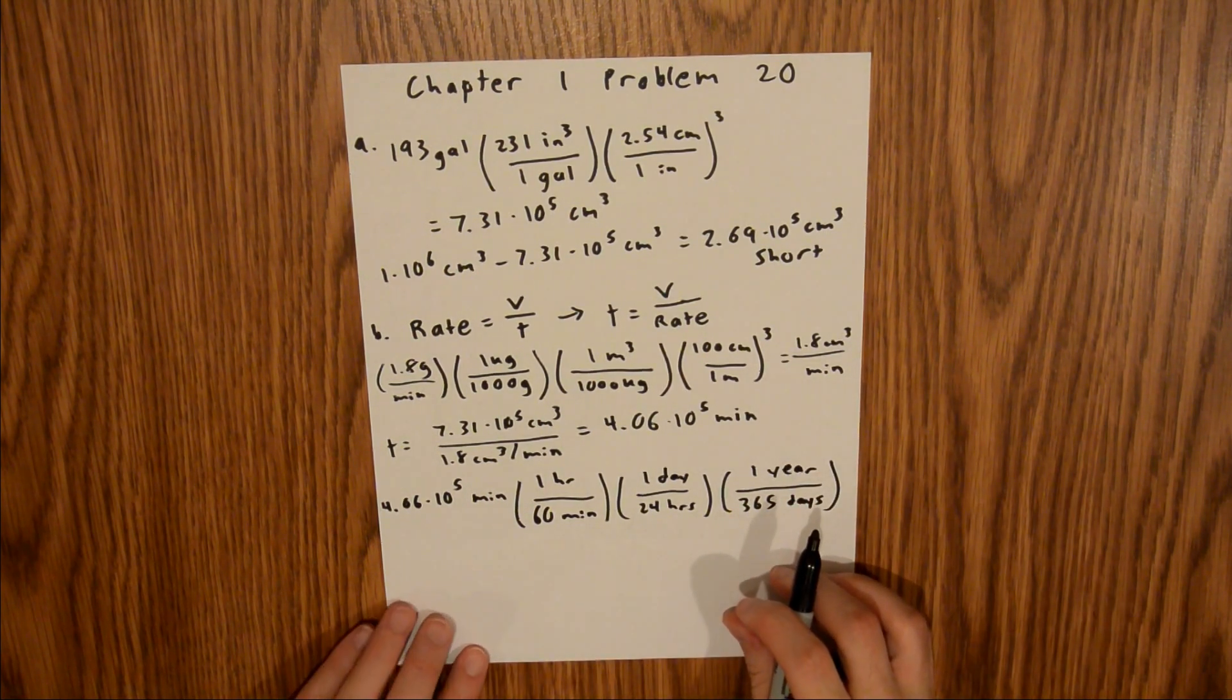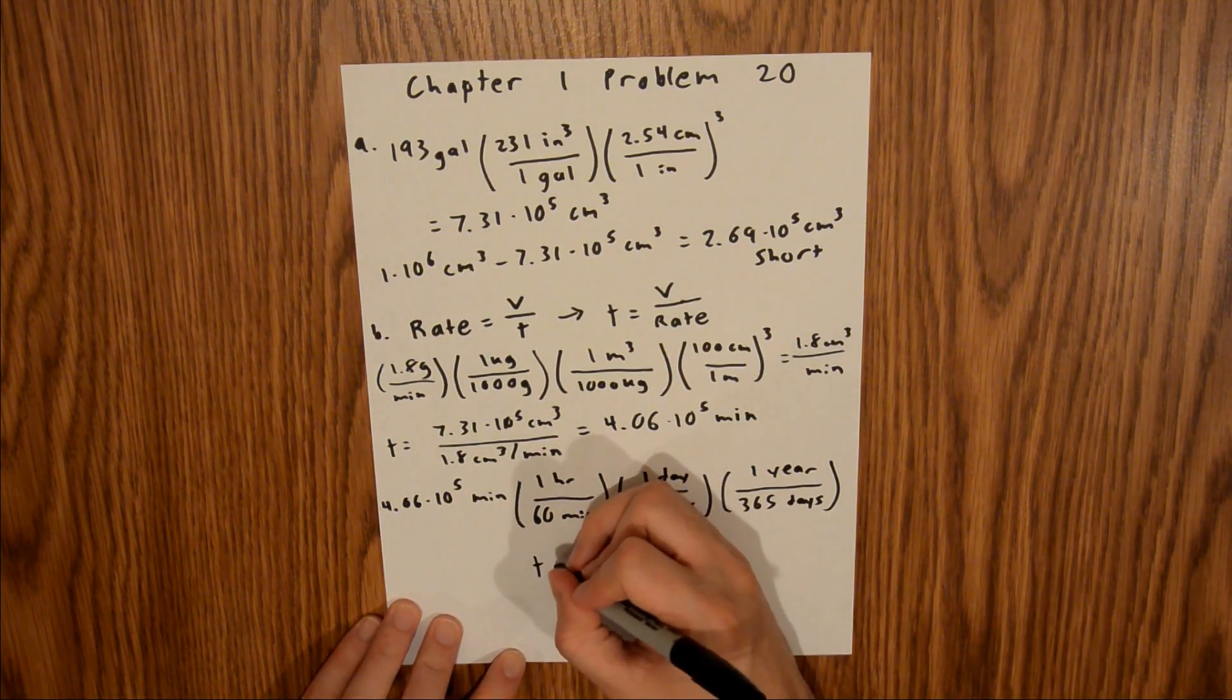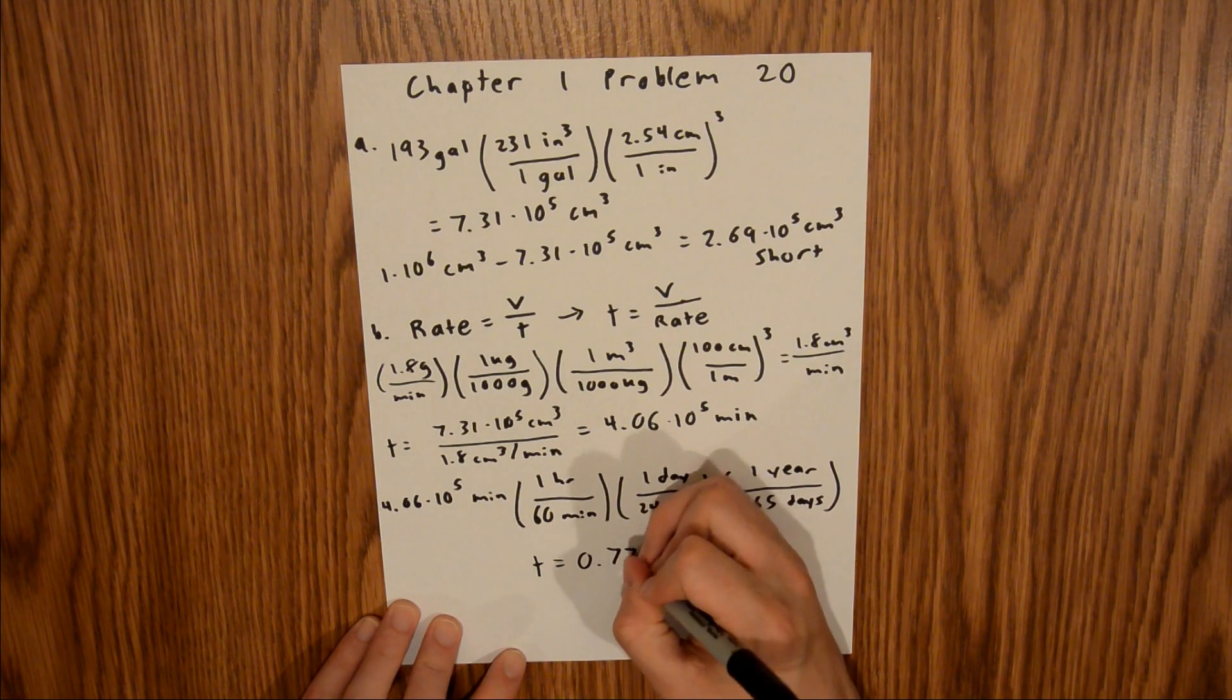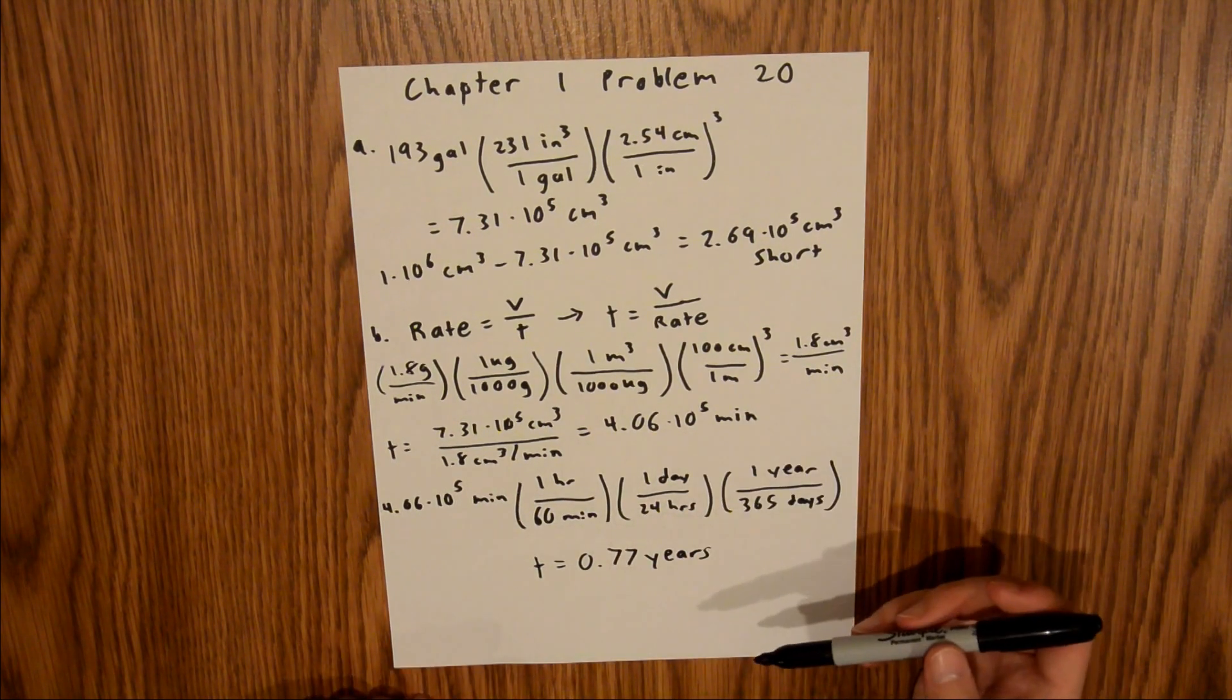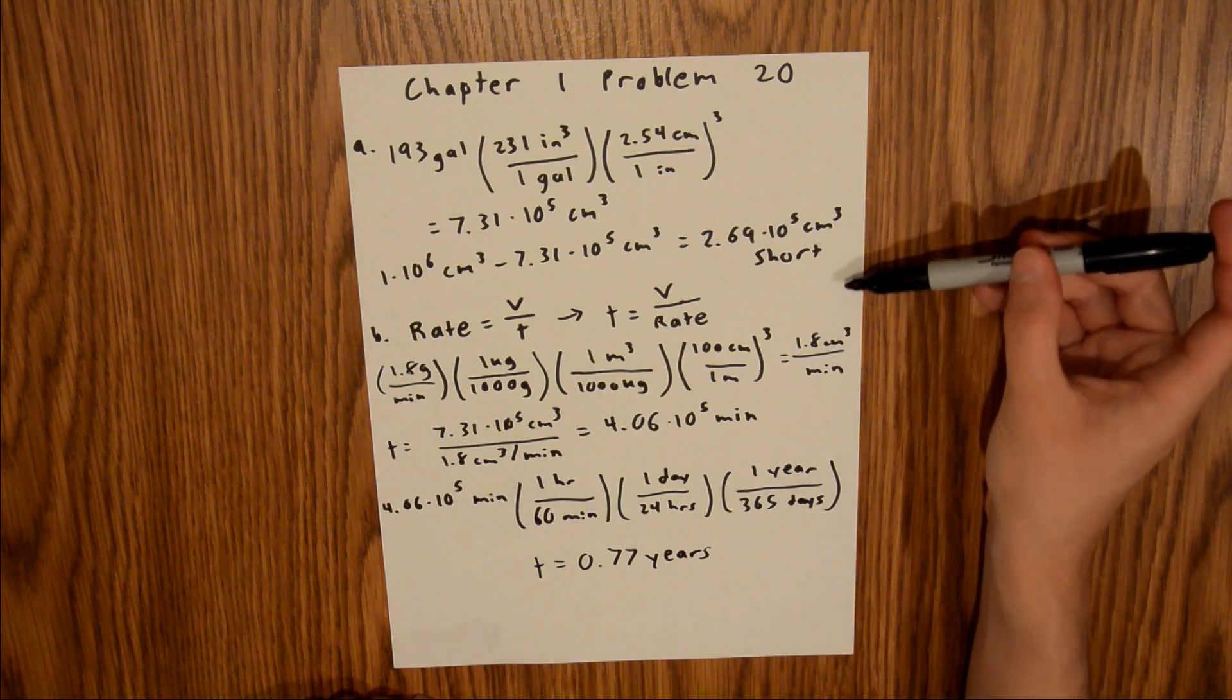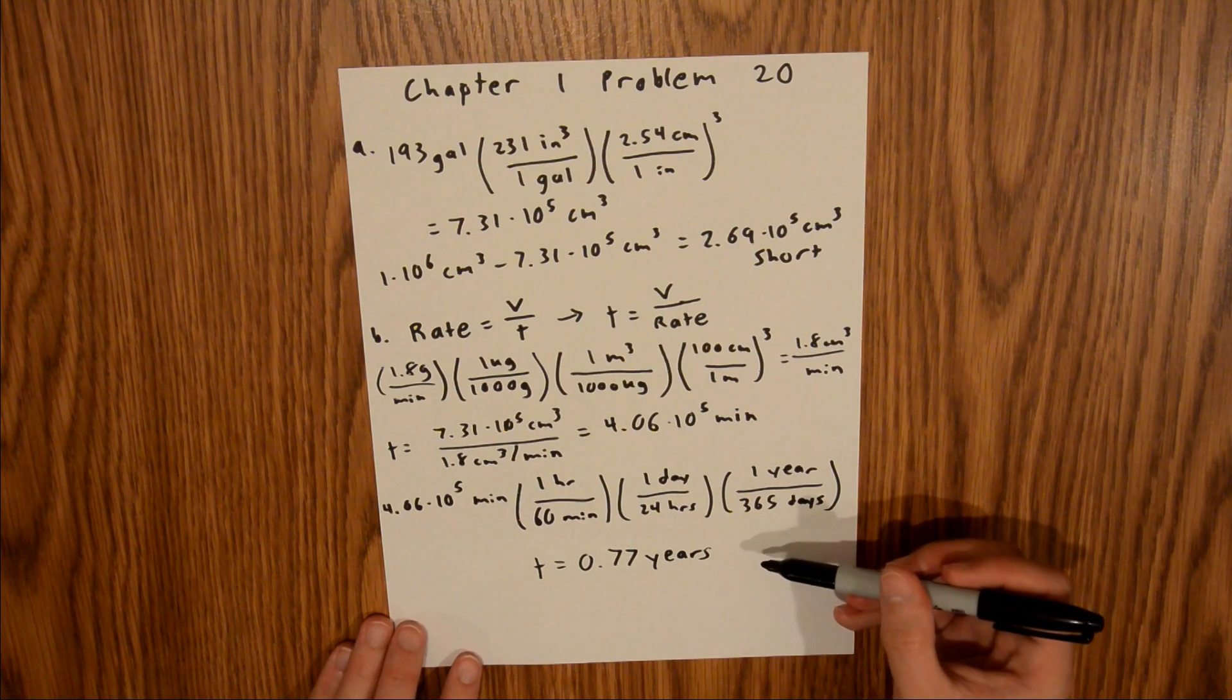And so now if you plug that into your calculator, you will find that the time required to fill this glass bottle is 0.77 years. And so your final answers for this problem, for part A, we have this right here, how short it is, and down here, the time to fill the bottle.